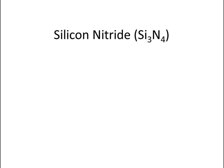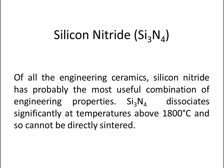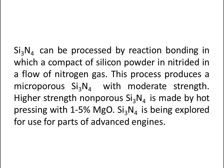Now let's talk about silicon nitride. Of all the engineering ceramics, silicon nitride has probably the most useful combination of engineering properties. Silicon nitride dissociates significantly at temperatures above 1800 degree Celsius and so cannot be directly sintered. It can be processed by reaction bonding, in which a compact of silicon powder is nitrided in a flow of nitrogen gas, producing a microporous silicon nitride with moderate strength. Higher strength non-porous silicon nitride is made by hot pressing with 1 to 5% magnesium oxide. Silicon nitride is being explored for use in parts of advanced engines.